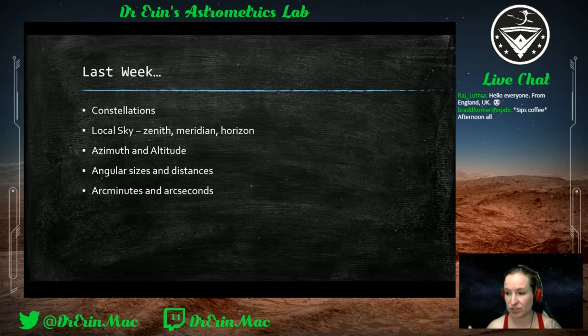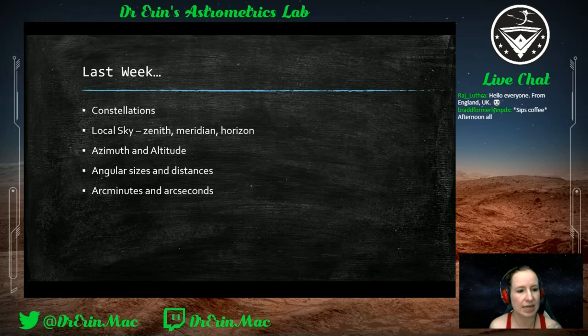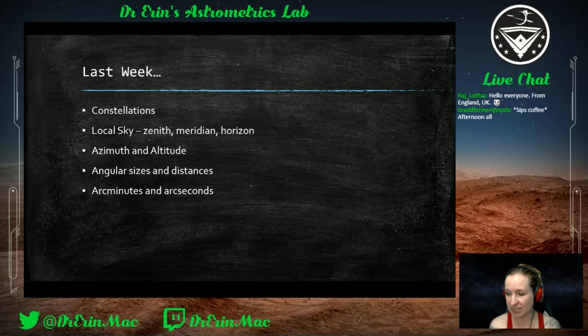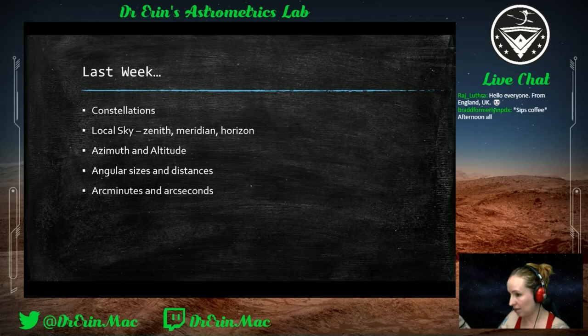We talked about what our local sky is and how to define different points in it. The zenith is right above you. The meridian is the line that goes from north to south through the zenith. The horizon is where the sky meets the ground. Azimuth and altitude: azimuth starts pointing north and goes clockwise, then altitude is how high up to find an object.